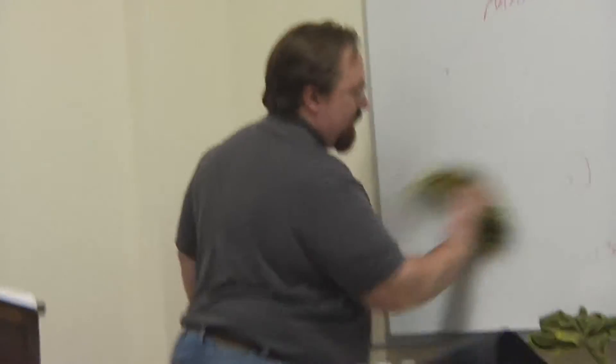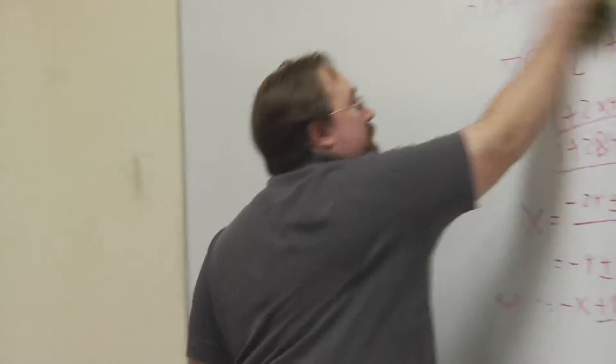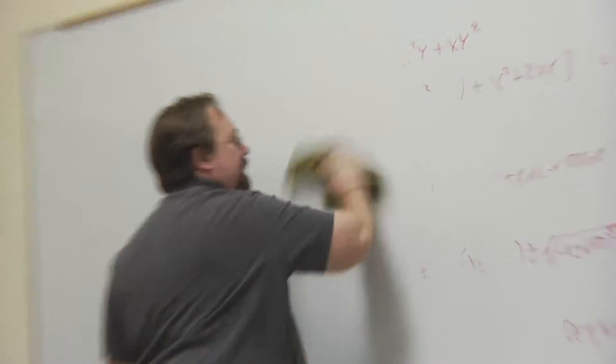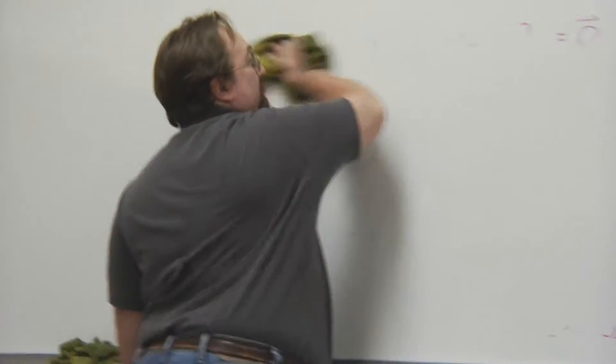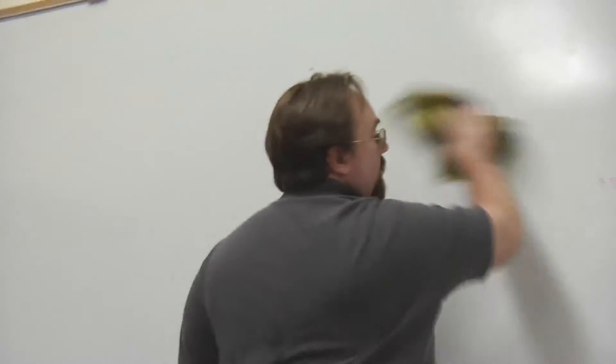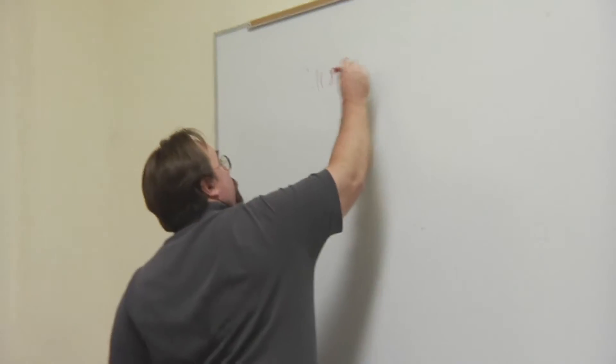Now I'm going to do Lagrange multipliers. So, finding a max, min function subject to constraints. For example, it'll just be one constraint. That will make it a little less arduous algebraically. So, this is 11.8, number 9.